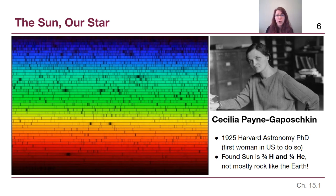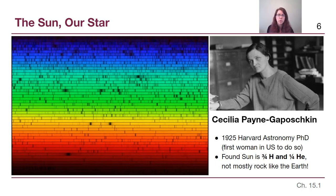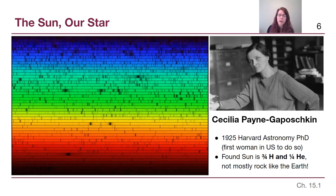The first person to do this for the sun or any star was Cecilia Payne-Gaposchkin. She earned a PhD in 1925 from Harvard University — the first woman to earn a PhD in astronomy in the entire United States. What she found was that the sun is about three quarters hydrogen and one quarter helium. At the time, everyone thought the sun was made of the same stuff in the same quantities as the earth, just hotter. Her dissertation was a really big deal, and many people didn't believe it. Her advisor even suggested she tone down her conclusions, but follow-up work over the next decade confirmed her findings were correct.